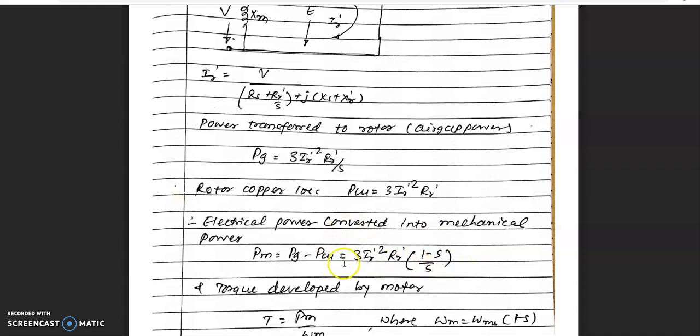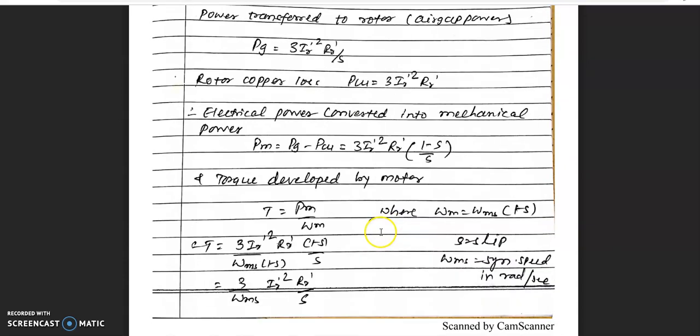This equation shows how mechanical power is developed. Mechanical power depends on three items: the value of I'r, rotor circuit resistance, and slip. The torque developed by the induction motor, which is power divided by omega, can be elaborated in this fashion.